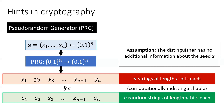Traditionally, a PRG is an expanding function that on input a uniformly random seed outputs a pseudorandom expanded sequence of bits. However, it provides no such pseudorandomness guarantees in its traditional form if the distinguisher has some information about the seed.